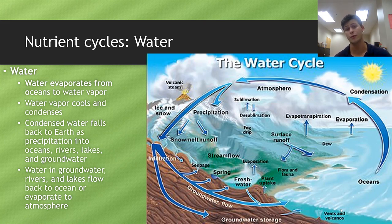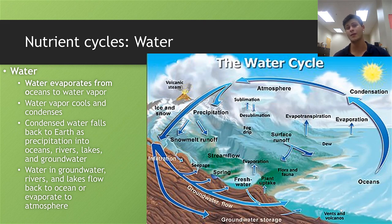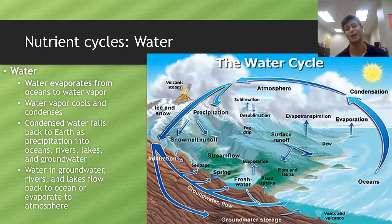If it falls on a terrestrial system, the water usually flows downhill as streams, congregates in lakes, and gradually makes its way back into the ocean. It could also percolate through the ground and wind up as groundwater, where it may not reach the ocean again for thousands or even hundreds of thousands of years. Water can stay in the form of groundwater for a very, very long time.